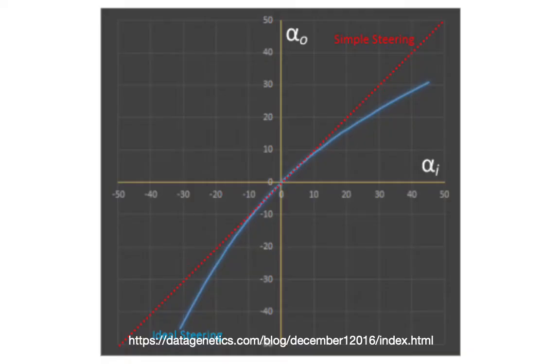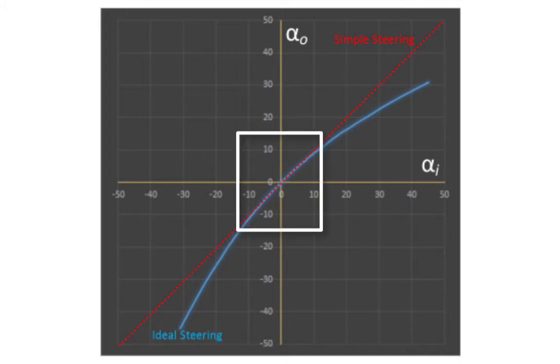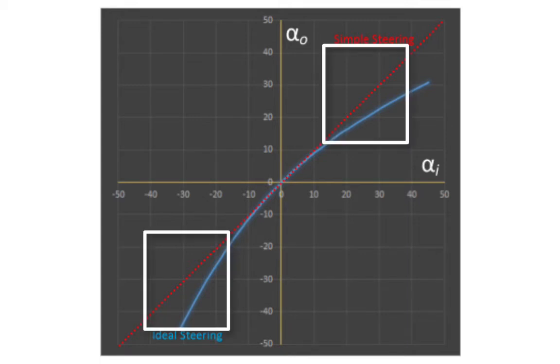This is how ideal steering compares to simple steering. We can see that through very small angles of turn, simple steering is fairly good, but as the angle or the turn becomes greater, so simple steering becomes a worse and worse solution.